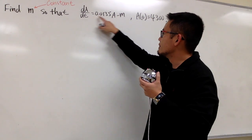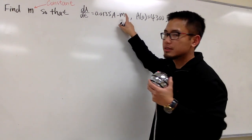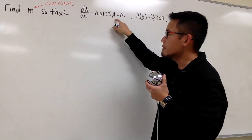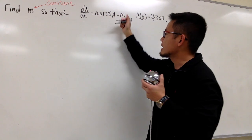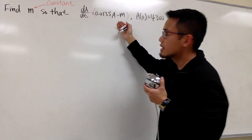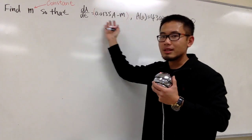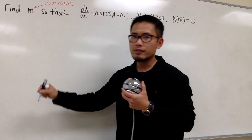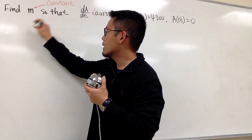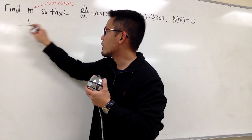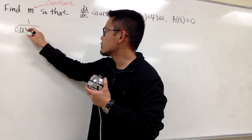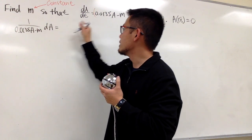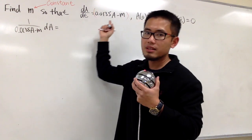Notice that M is just a constant, and we have 0.0135A. This is separable, because we can take the entire right-hand side, divide on both sides, and separate the variables. Now let's go ahead and solve that. We will have 1 over (0.0135A minus M) dA, and we multiply dt on both sides.